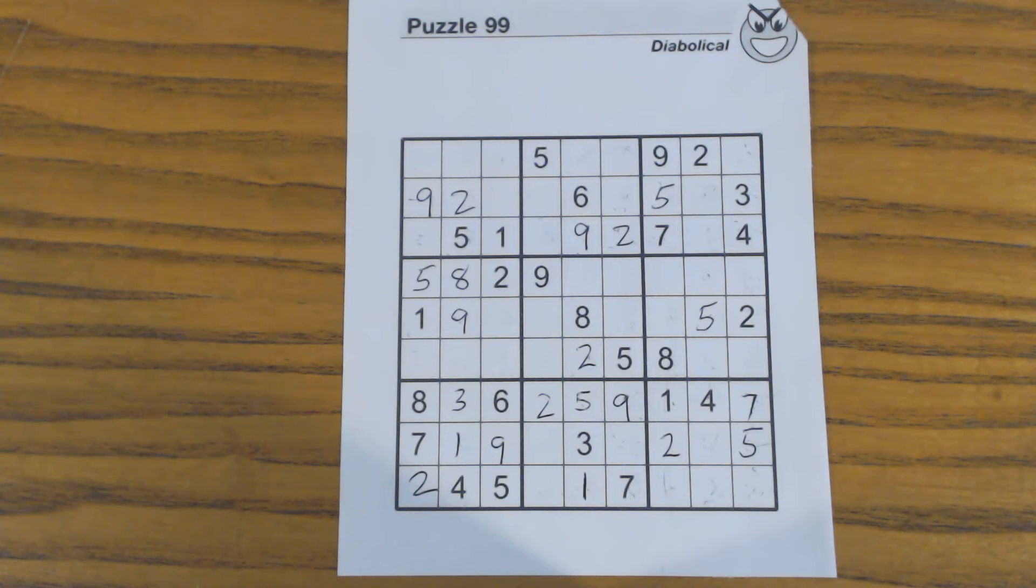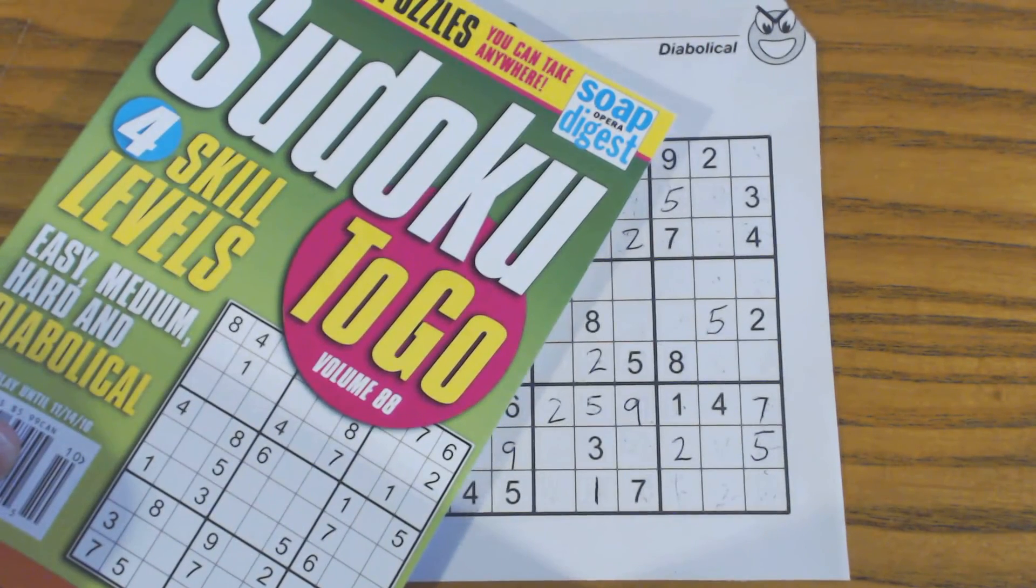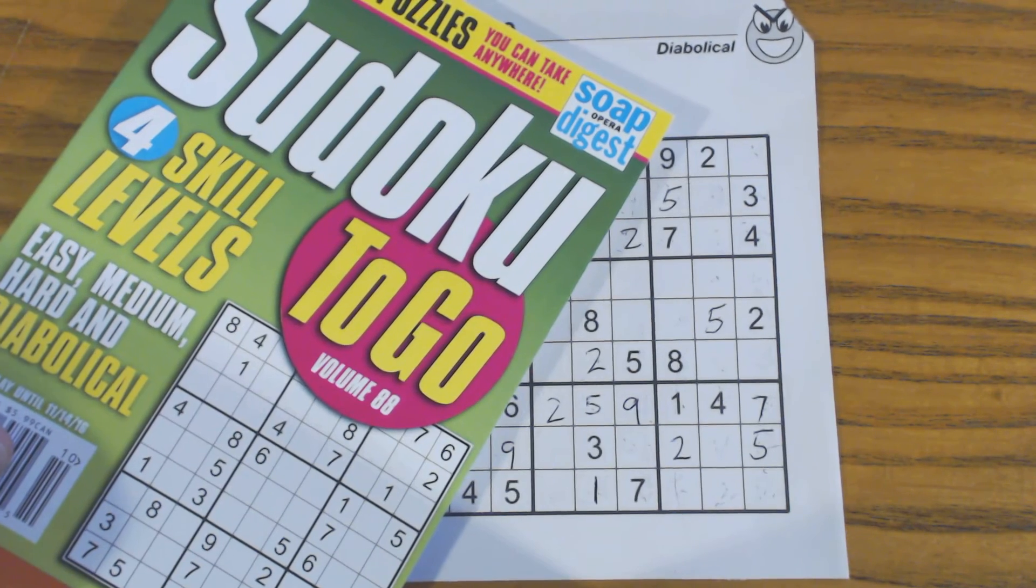This is puzzle number 99. It's a diabolical puzzle, the most difficult one in this book from Sudoku to Go volume 88 by Soap Opera Digest.